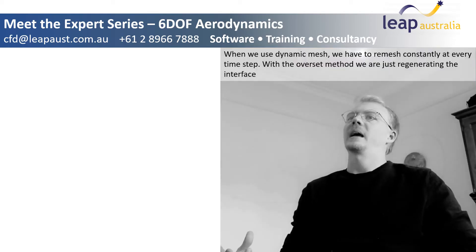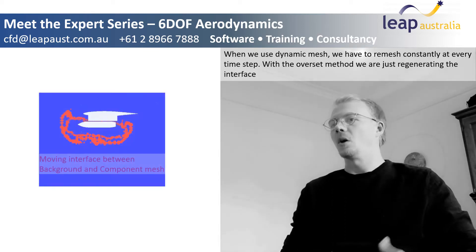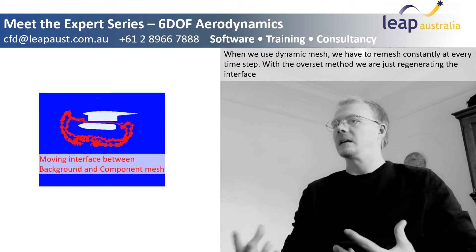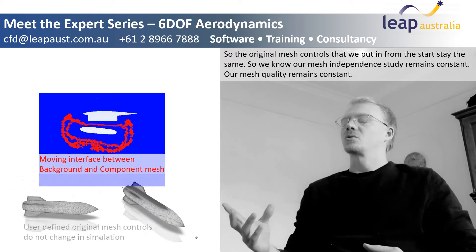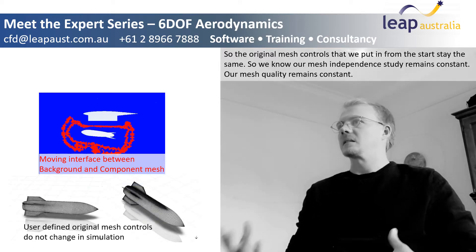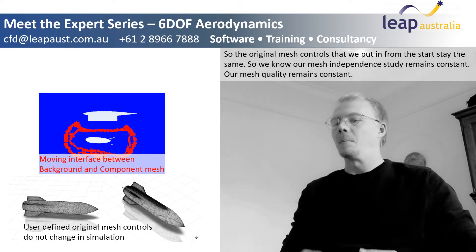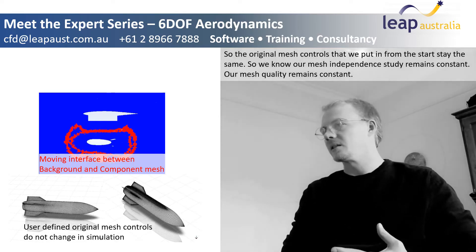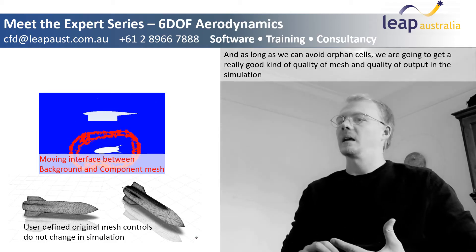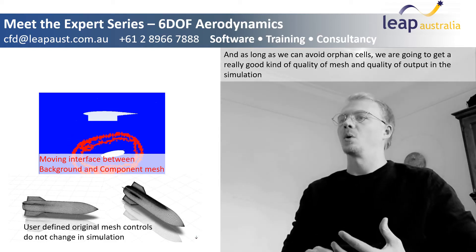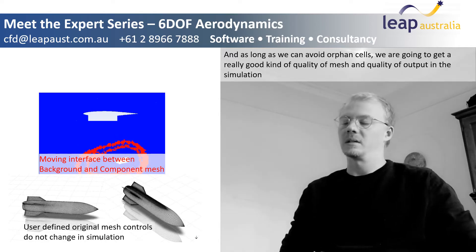When we use dynamic mesh we have to remesh constantly at every time step. With the Overset method we're just regenerating the interface. So the original mesh controls that we put in from the start stay the same, so we know that our mesh independence study remains constant. Our mesh quality remains constant, and as long as we can avoid Orthon cells we're going to get a really good quality of mesh and quality of output in the simulation.